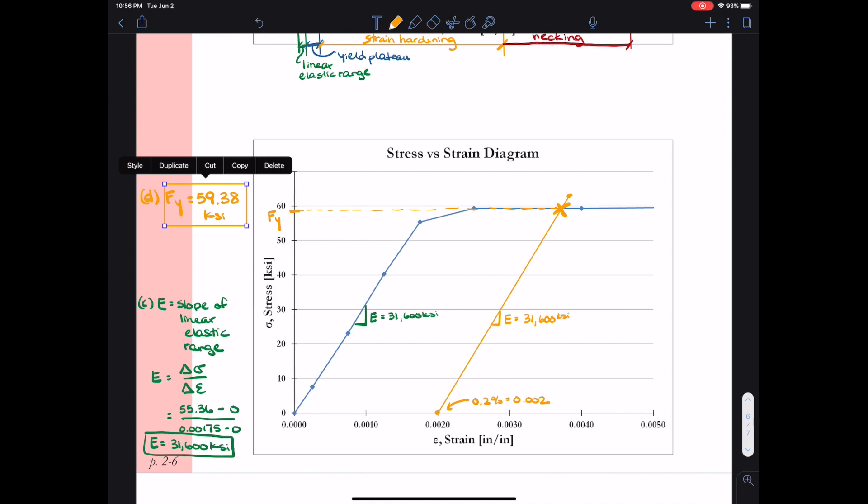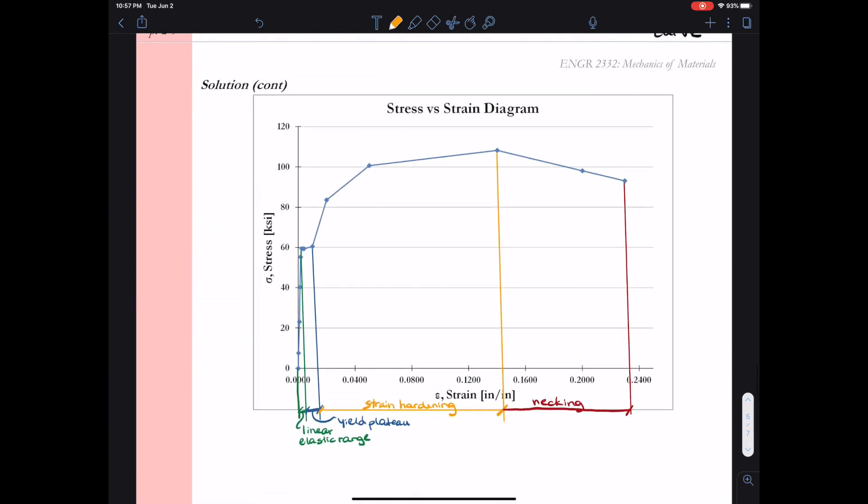For Part E, we're asked to identify the approximate tensile strength of the material. So when we talk about the tensile strength, we often refer to this as the ultimate tensile strength or the ultimate stress of the material. So this is F sub U. So this is the peak stress that our material handles before fracture. So I just come back up to my first stress strain plot where I can see all of the data and I see that my maximum data point is right there. And I track that line back to the y-axis to figure out what my ultimate tensile strength is.